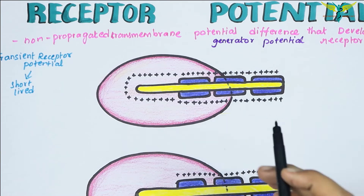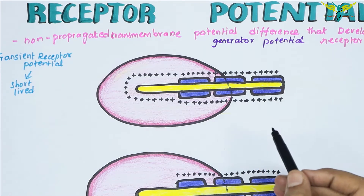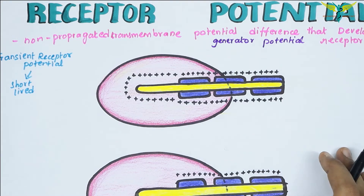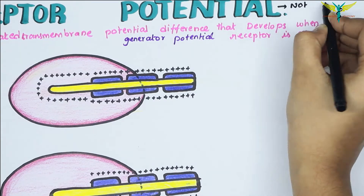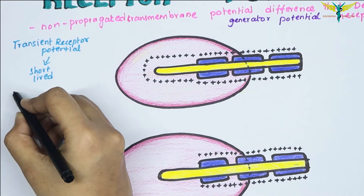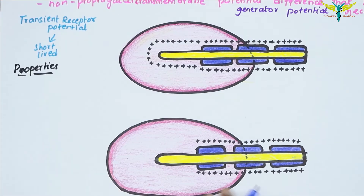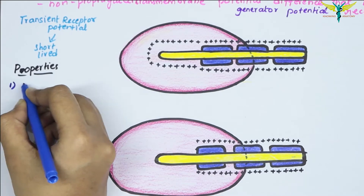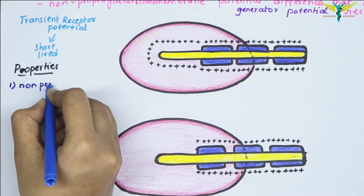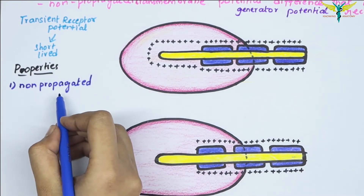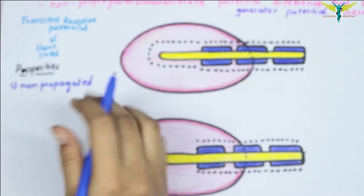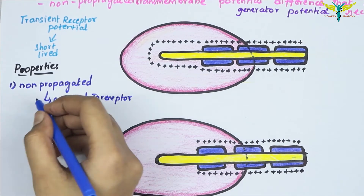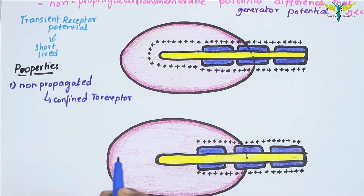The receptor potential is similar to the excitatory post-synaptic potential in a synapse, the end plate potential in a neuromuscular junction, and the electrotonic potential in the nerve fiber. Regarding its properties, the receptor potential has two important properties: first, it is non-propagated and confined within the receptor itself; second, it does not obey the all-or-none law.